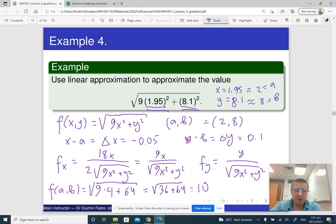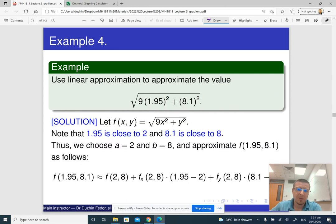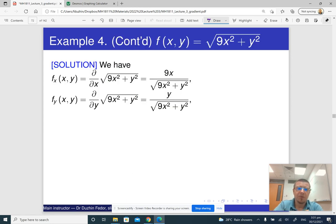Which means that we can actually find f_x of a, b. So f_x of a, b is going to be, my a is two, my b is eight, nine times two divided by, well we already calculated, it's just 10. And f_y of a, b is going to be y is eight over 10.